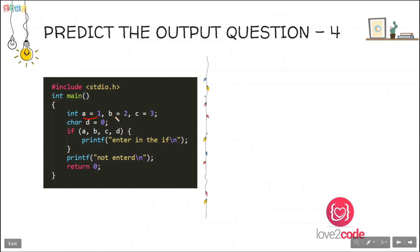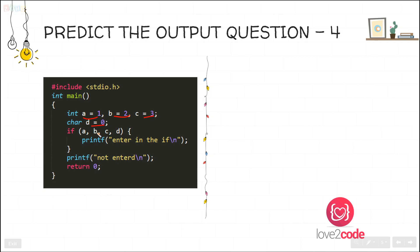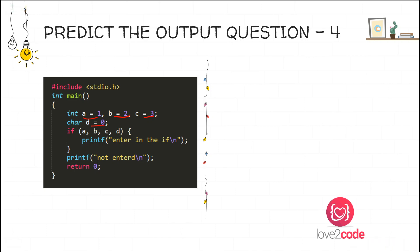The fourth question initializes a to 1, b to 2, c to 3, and d to 0. In the if-condition, it checks whether a is greater than 0 — true. Then checks b — greater than 0, true. Then checks c — greater than 0, true. Then checks d — d is 0, so this condition is false. Since d equals 0, the overall if-condition becomes false and the program does not enter the if-block. The expected output is 'not entered'.